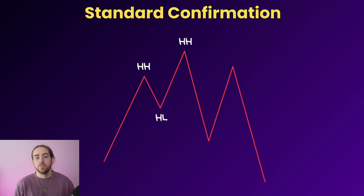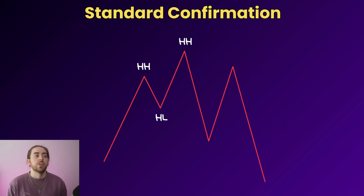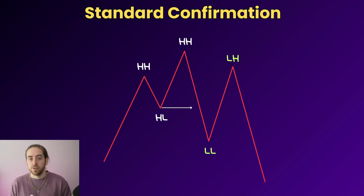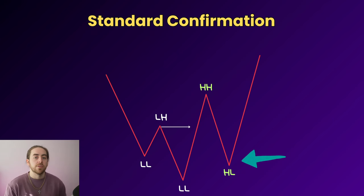Do not blindly buy or sell into pin bars. Instead you should wait for a standard confirmation. The standard confirmation follows market structure and is where we look for a shift from higher highs and higher lows into lower lows and lower highs. When the market breaks at that level it confirms the trend has shifted from bullish to bearish, and it's this lower high point where we want to be looking to sell. Standard confirmation works exactly the same for a buy trade but looking for a shift from lower lows and lower highs into higher highs and higher lows.